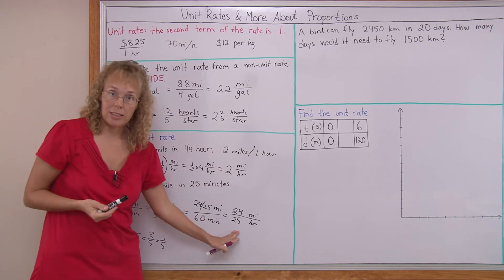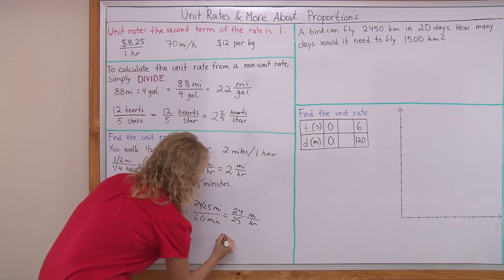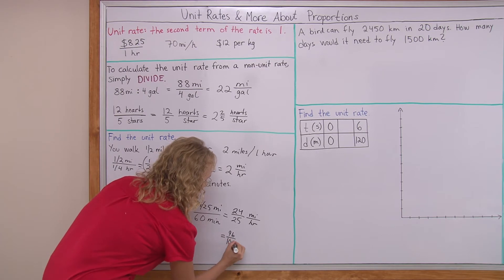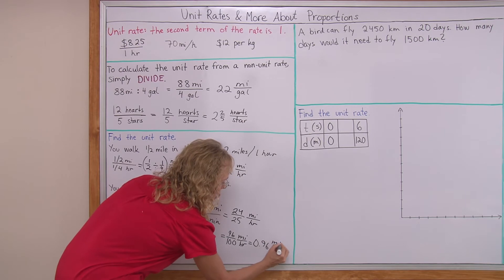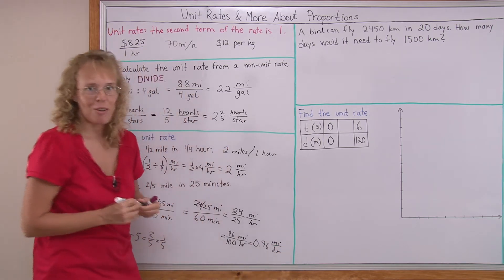You could also maybe write this as a decimal. This would be the same as 96 over 100 miles per hour, which is 0.96 miles per hour, almost one mile per hour. Slow walking.